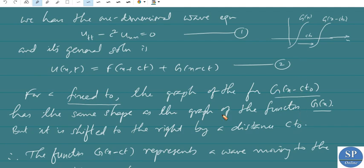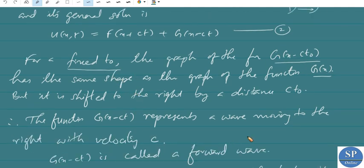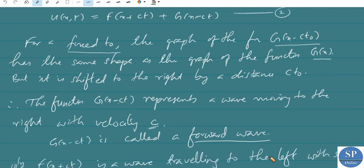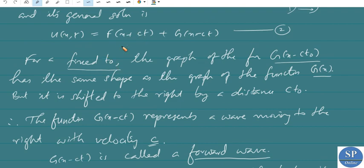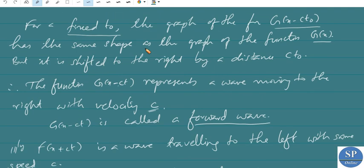The graph of g(x-ct₀) has the same shape as g(x) but is shifted to the right by a distance ct₀, where t₀ is fixed. So the function g(x-ct) represents a wave moving to the right with velocity c. Similarly, the graph of f(x+ct₀) has the same shape as f(x) but is shifted to the left by a distance ct₀.